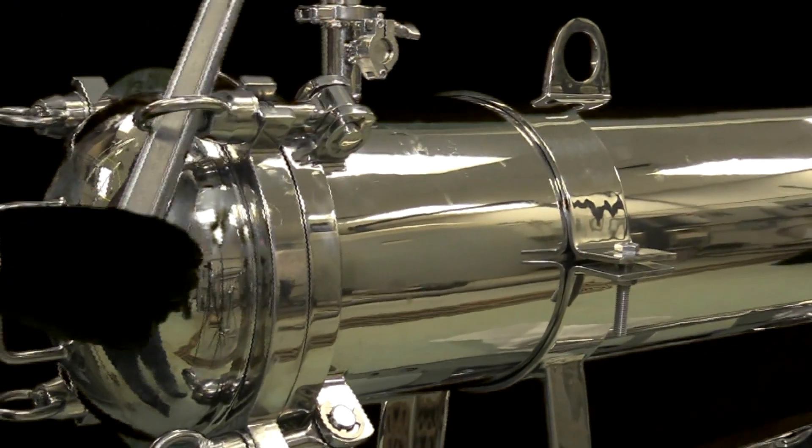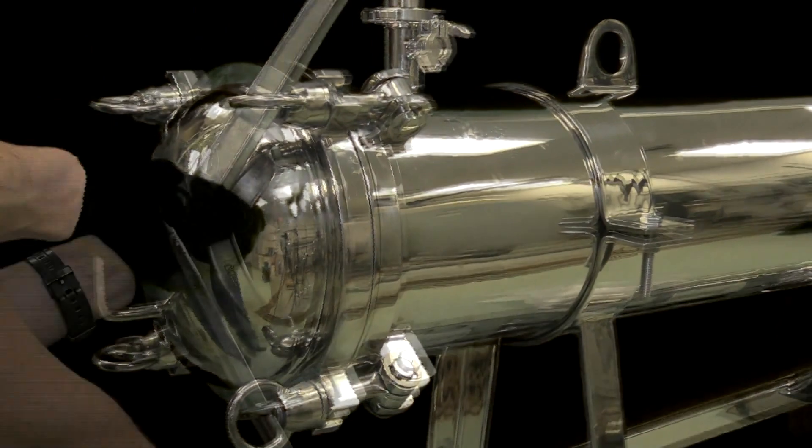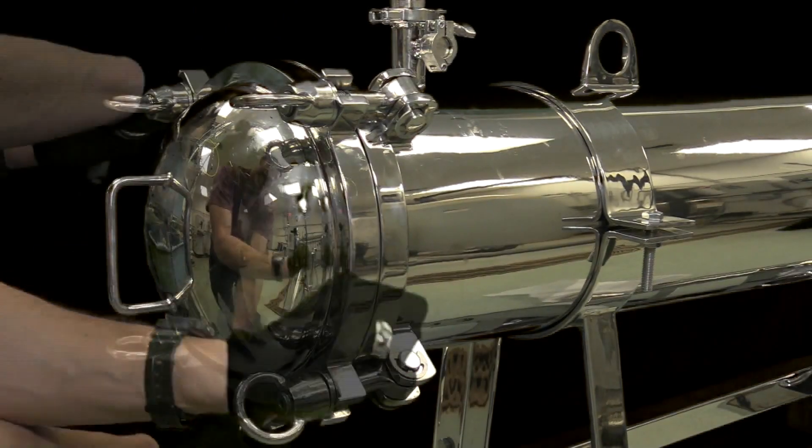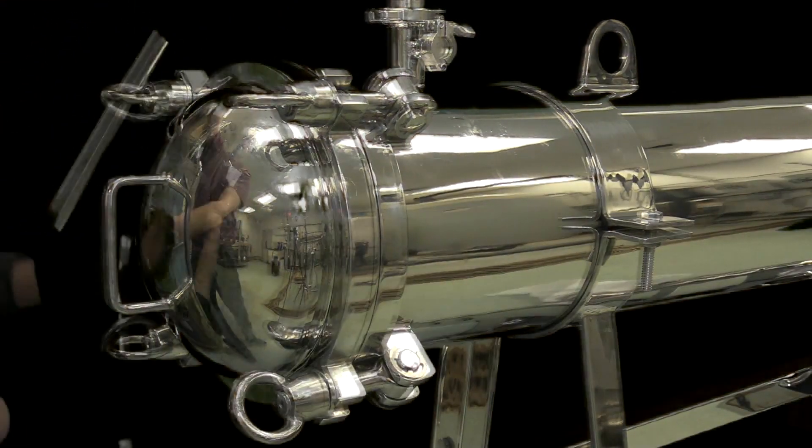Then, use a rigid bar to tighten each clamp by roughly one quarter turn until the housing lid contacts the housing.